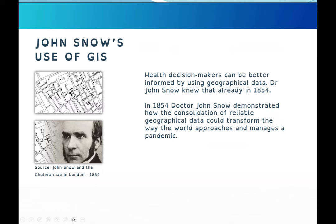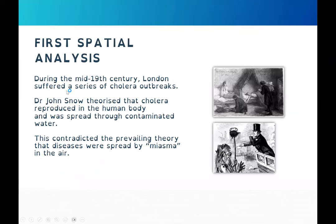John Snow's use of GIS dates back to 1854. Dr. John Snow demonstrated how consideration of reliable geographical data can transform the way the world approaches and manages a pandemic. Health decision makers can be better informed by using geographical data. During the mid-19th century, London suffered a series of cholera outbreaks. Dr. Snow theorized that cholera reproduced in the human body and was spread through contaminated water.